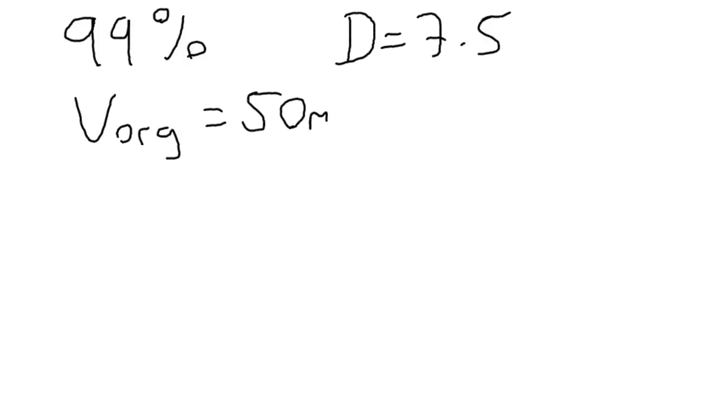And there's a number of questions we can ask. For example, say we want to know how many extractions do we need to do in order to get 99% efficiency. In other words, 99% of all the analyte transferred into a different phase. To do that, we need to know the distribution ratio, which in this case is 7.5. We also need to know the volume of the organic phase, say that's 50 milliliters, and the volume of the aqueous phase, say that's 30 milliliters.